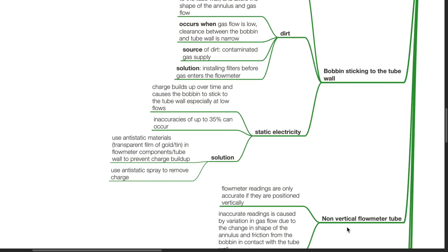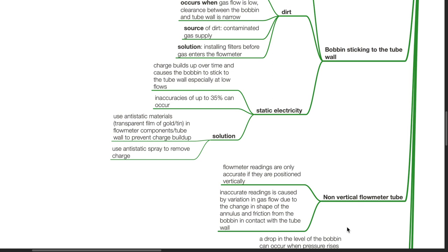Static electricity: Charge builds up over time and causes the bobbin to stick to the tube wall especially at low flows. Inaccuracies of up to 35% can occur.